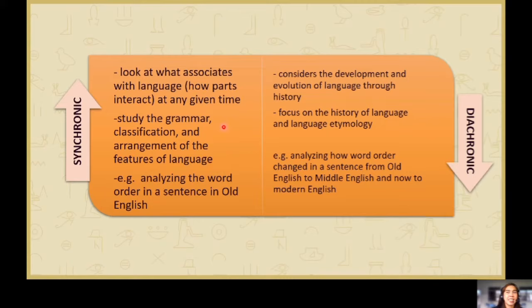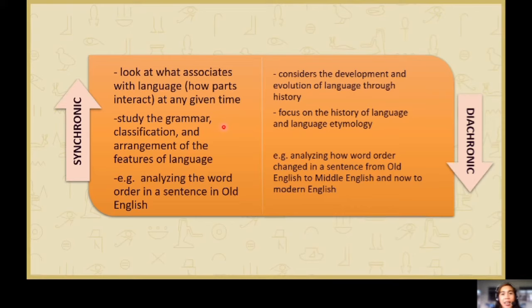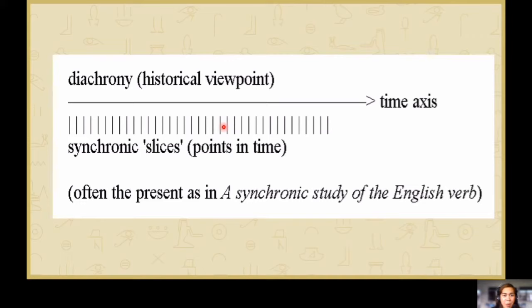Next is synchronic and diachronic — this is about the span of time when we study a language. When we talk about synchronic, we study a language at a particular time — for example, what is the language of PCCM students nowadays, in the first semester? But for diachronic, we use a long time span — like, what is the language of Filipino people from the 20th century to the 21st century? That's a long span of time. For diachronic you study the overall, but for synchronic we focus on one particular strand.